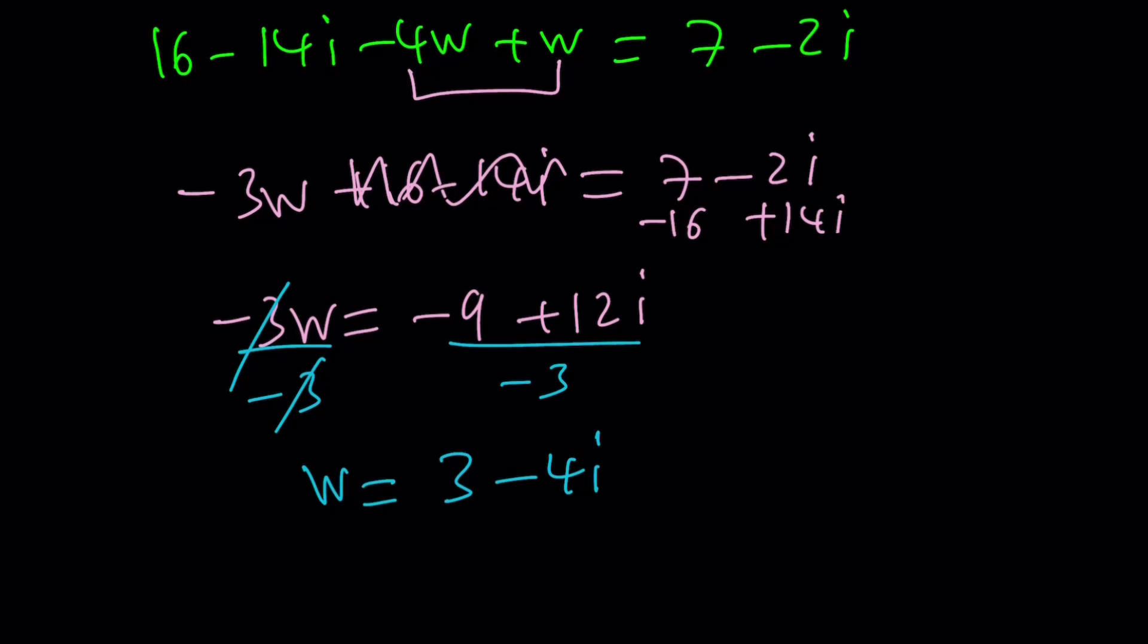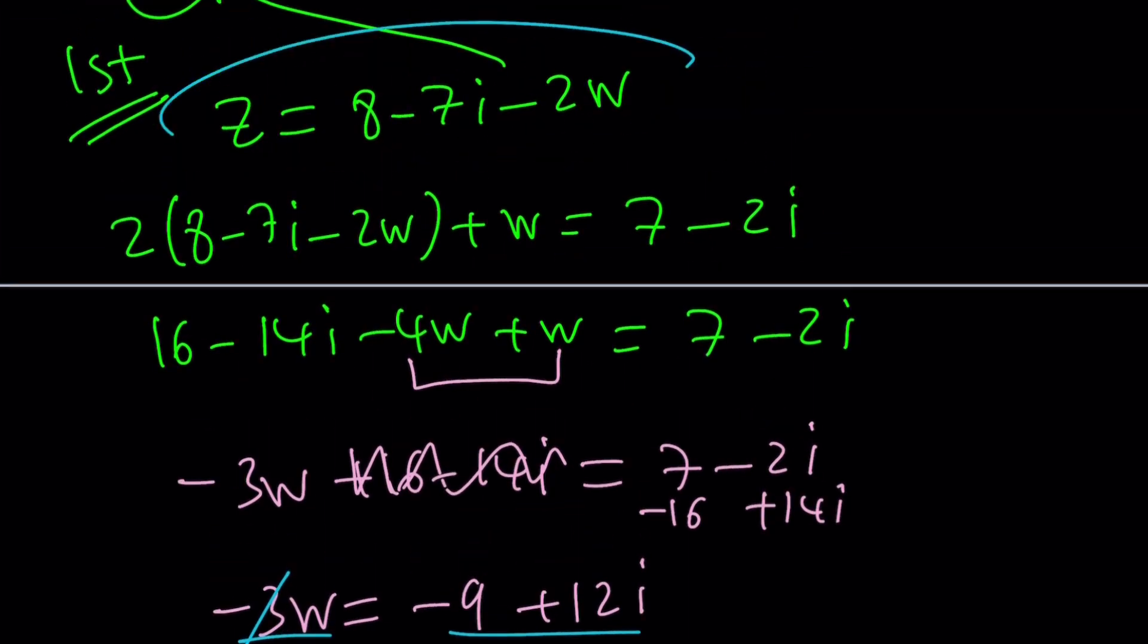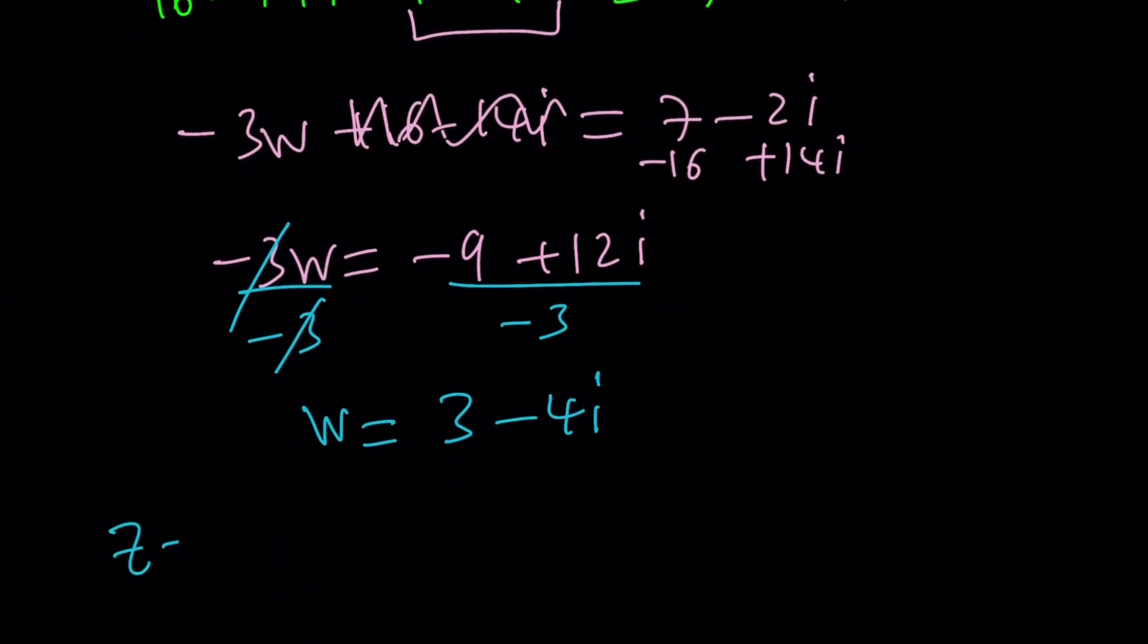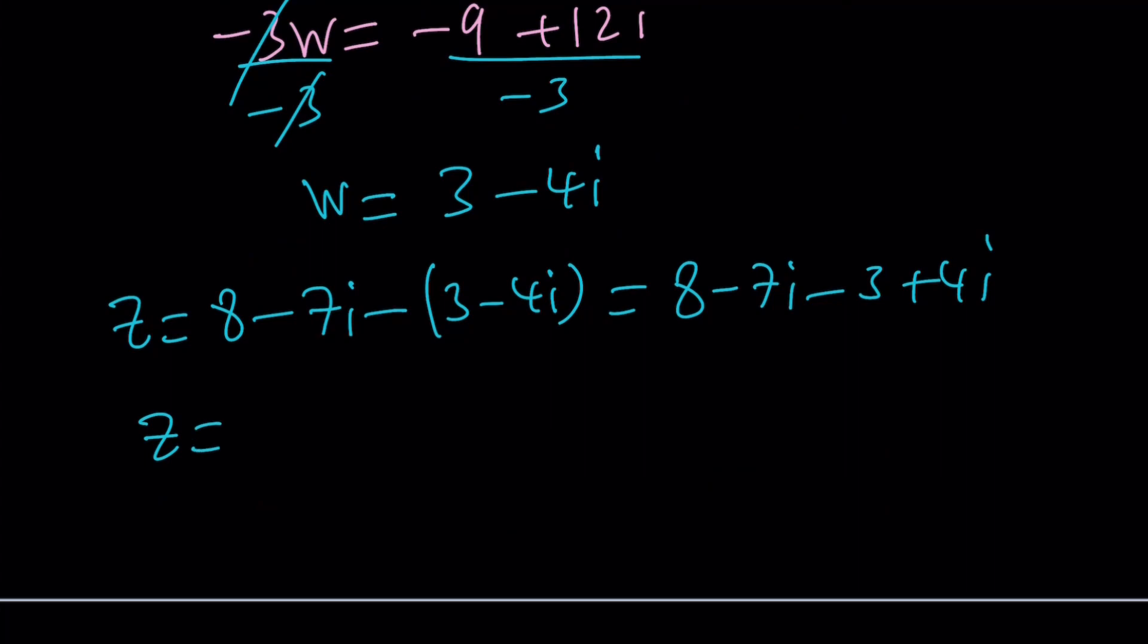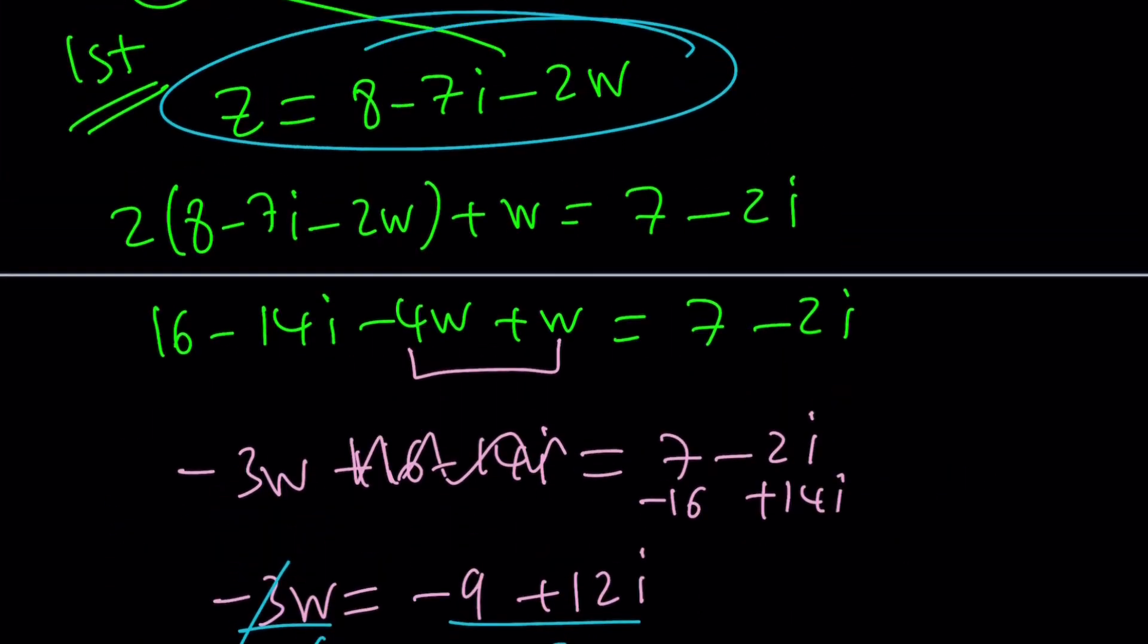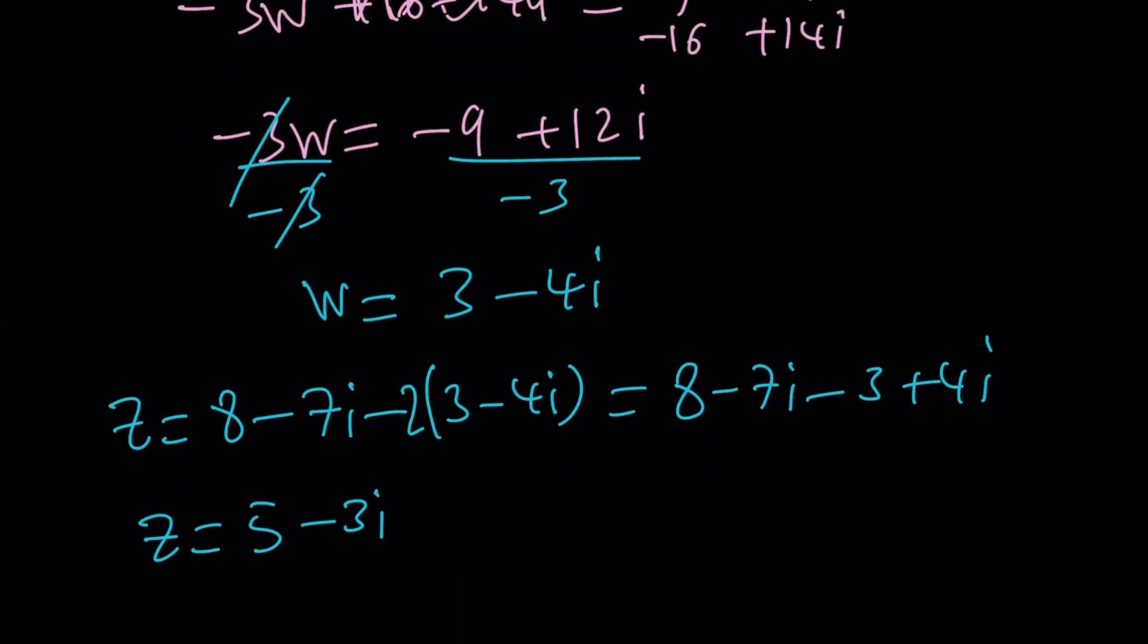Now, you want to find z from here. We have a formula. Let's go ahead and plug in the value we found. z equals 8 minus 7i minus w, which is 3 minus 4i. And this can be written as 8 minus 7i minus 3 plus 4i. And from here, z becomes 5 minus 3i. Is that right? Okay, we forgot to multiply by 2. Yes. We've got to multiply by 2 here.